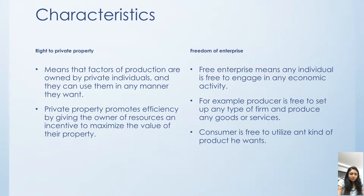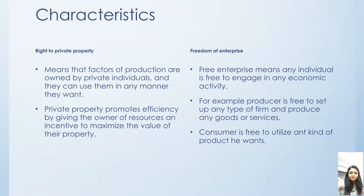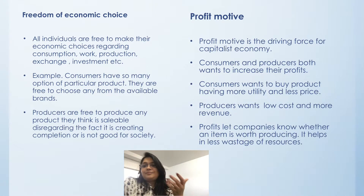The second characteristic is free enterprise. Free enterprise means that any individual is free to engage in any economic activity they choose. For example, if you want to do a wine business, you are free to do so — the government will not stop you on any grounds. The producer is free to set up any type of firm and produce any type of goods or services, and consumers are free to utilize any kind of resources. You have freedom of any form of organization and any kind of consumption.